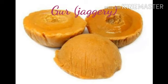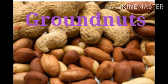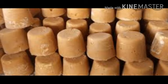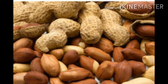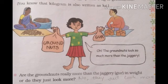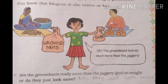On page 113, it is given about Sabnam. Sabnam loved to eat jagari and groundnuts. One day she bought 1 kg of jagari and 1 kg of groundnuts. You know that kilogram is also written as kg. In Sabnam's hands she is holding groundnuts and gur. Sabnam says, 'Oh, the groundnuts look so much more than the jagari!' Groundnuts are looking more than the gur.